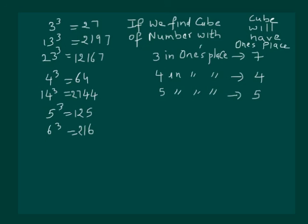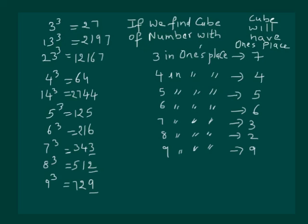Similarly, 6³ has 6. So if we find cube of a number with 6 in 1's place, then cube number will have 6. Similarly, for 7, number will have 3 in 1's place. For 8, cube number will have 2 in 1's place, and for 9, cube number will have 9 in 1's place.